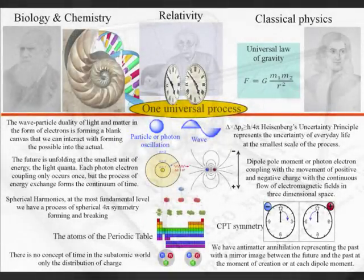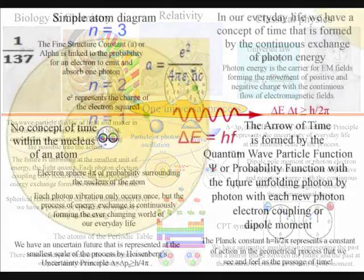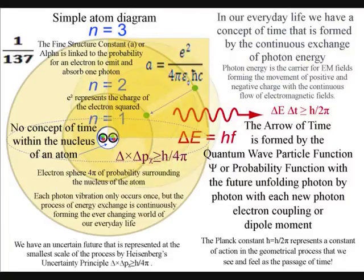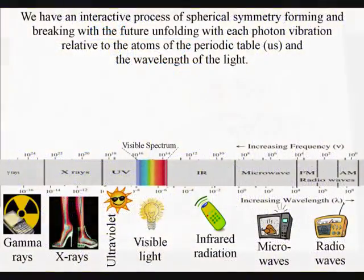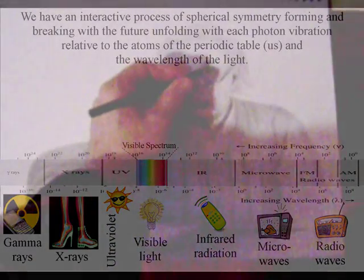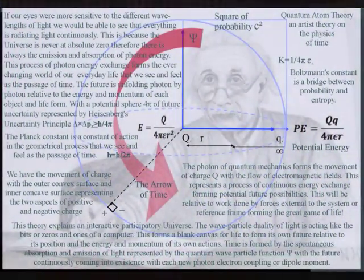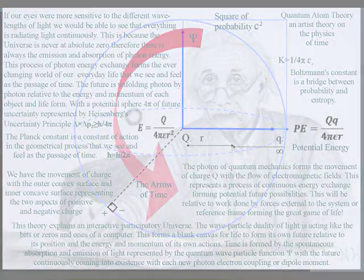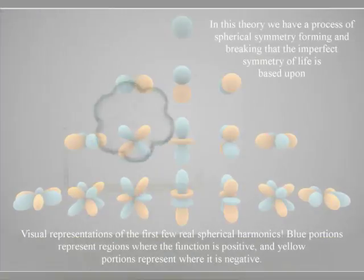The light photon oscillation or vibration forms the movement of charge, with an emergent uncertain future unfolding relative to the atoms of the periodic table and the wavelength of the electromagnetic spectrum. The wave-particle duality of light and matter in the form of electrons is forming a blank canvas that we can interact with, forming the possible into the actual.